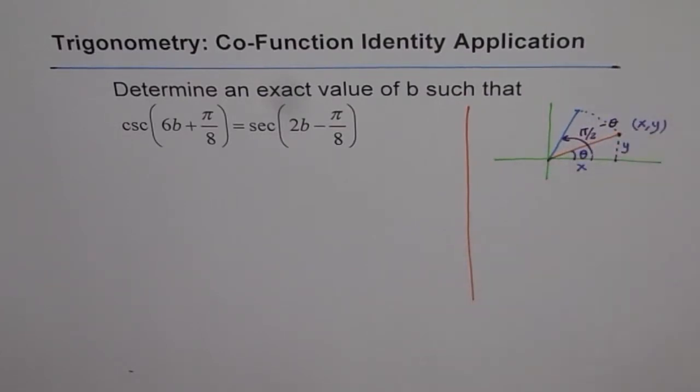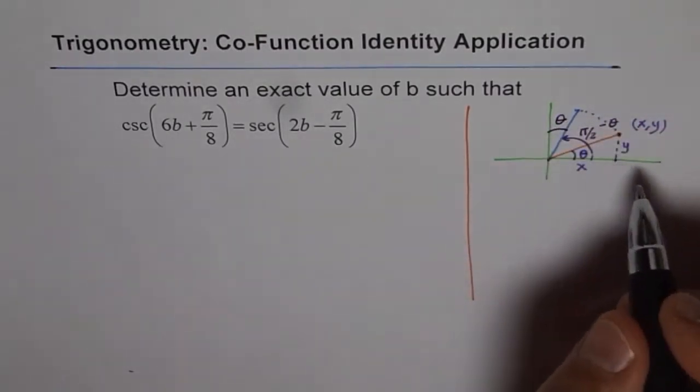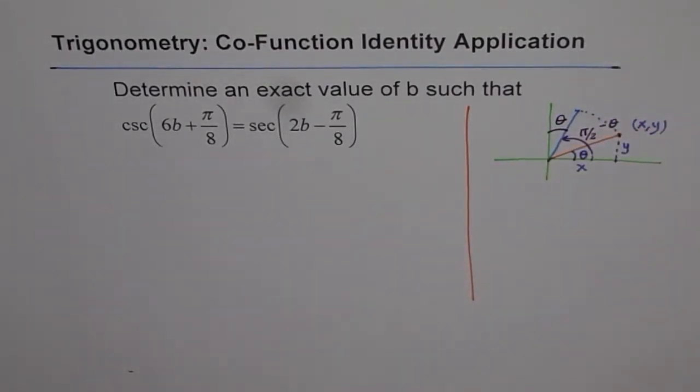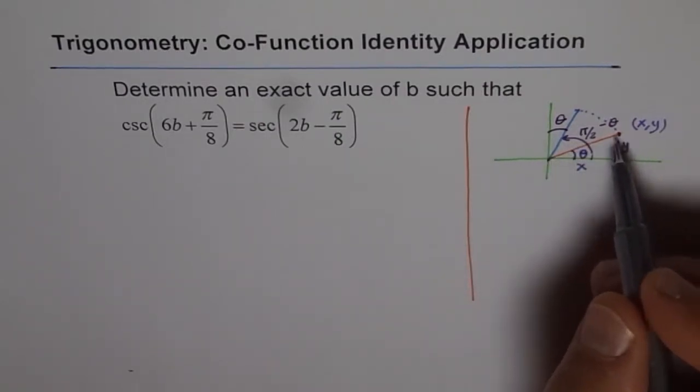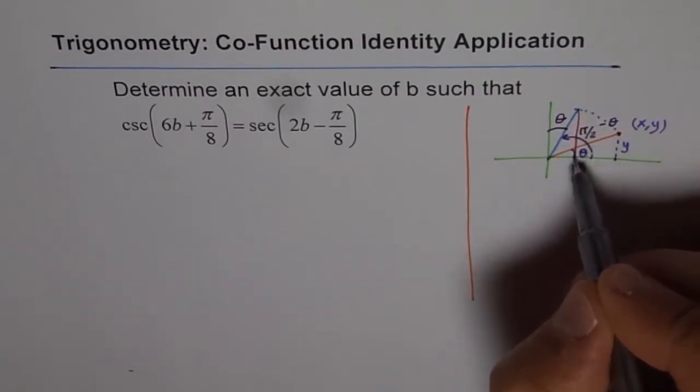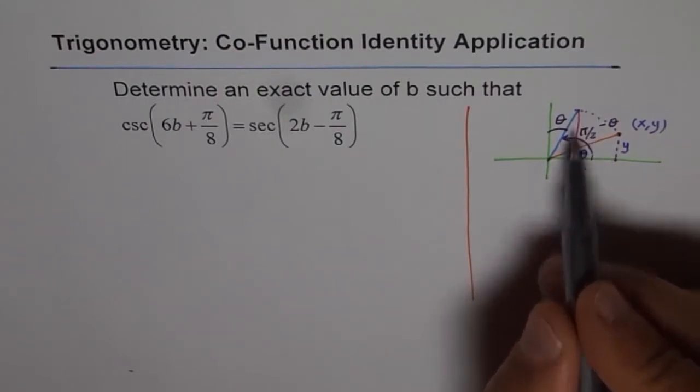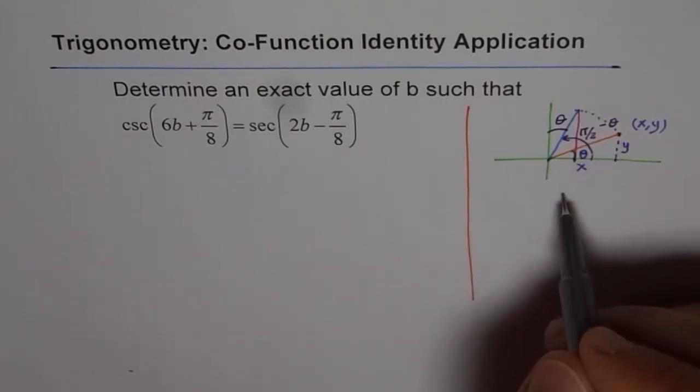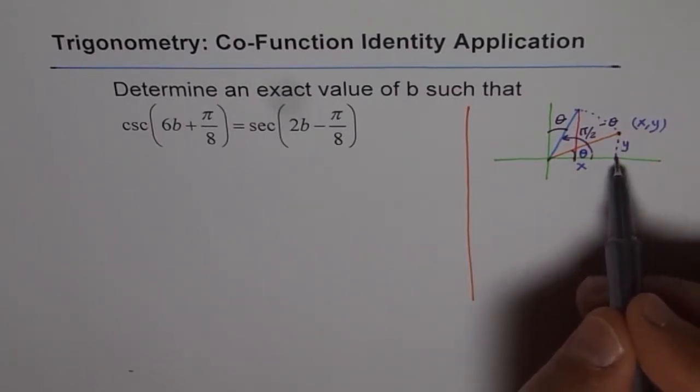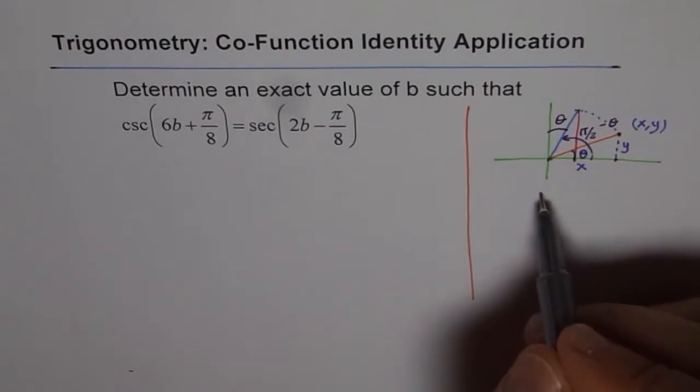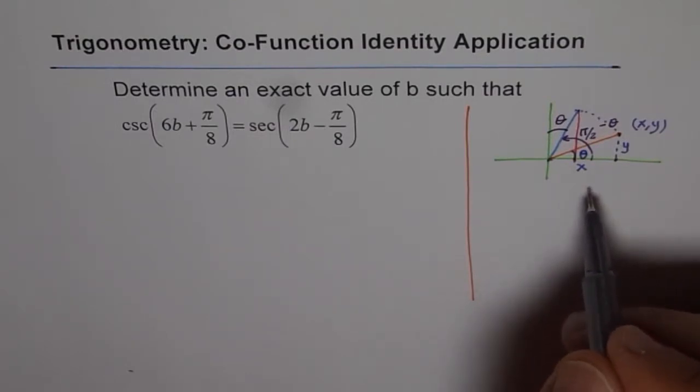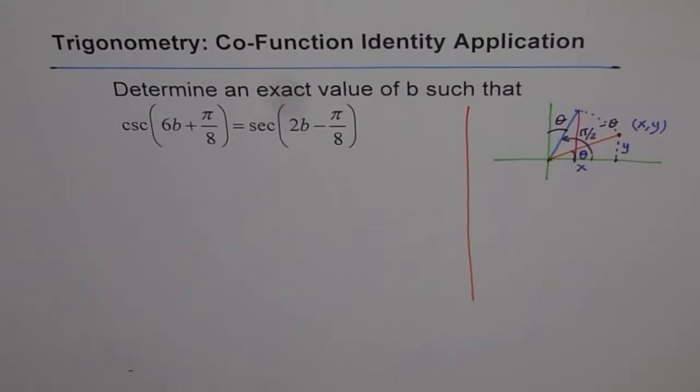When that is π by 2 minus theta, that means this angle is theta. If you analyze these two triangles, one with angle theta, the other one with π by 2 minus theta, you will notice that the length of adjacent side becomes the length of opposite side, or cos changes to sine. Or the length of opposite side becomes the length of adjacent side, or sine changes to cos. Sine and cos are co-functions. That is a very important observation.